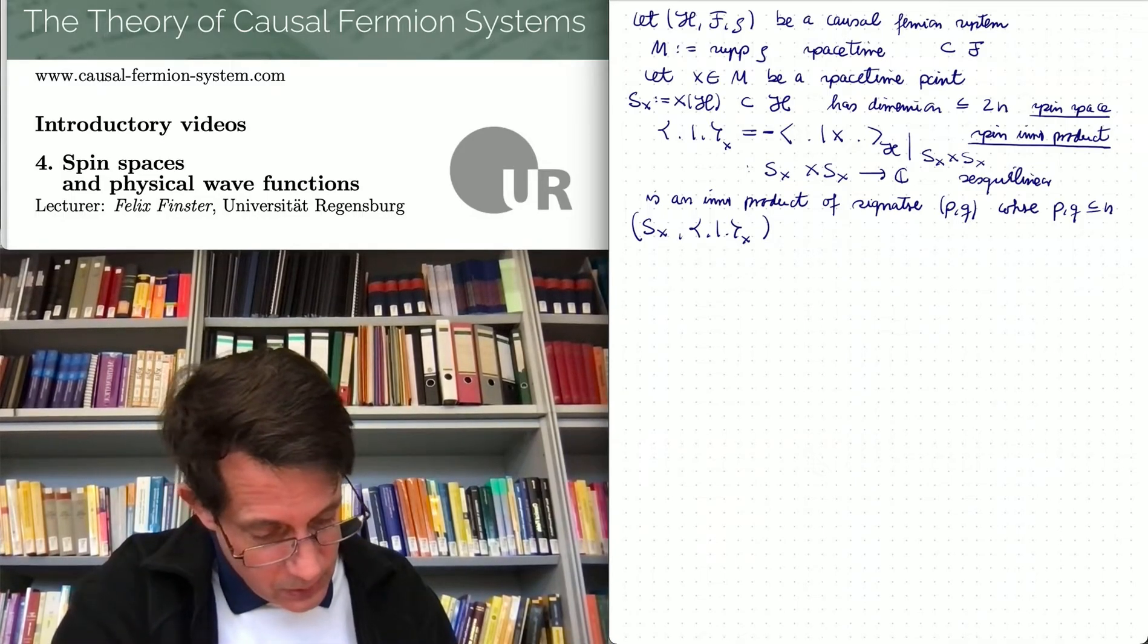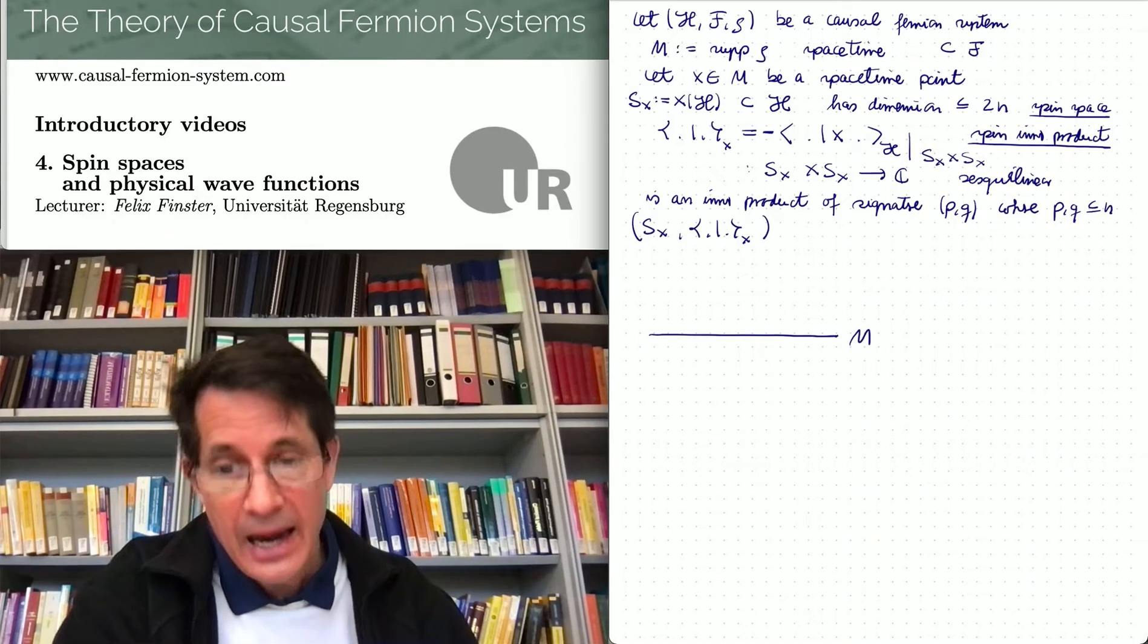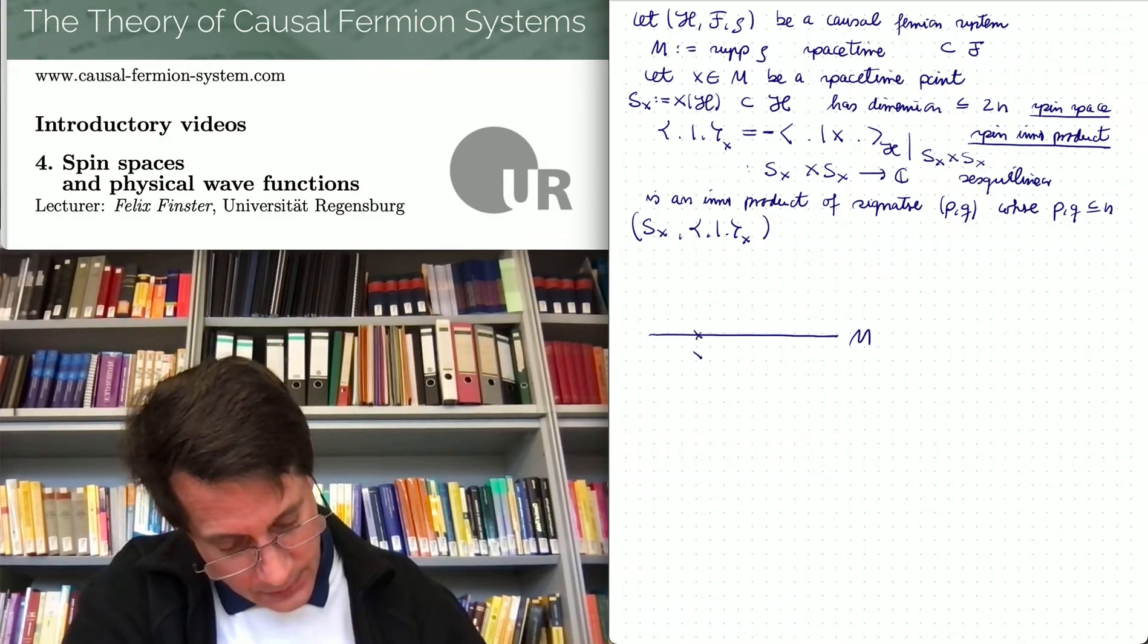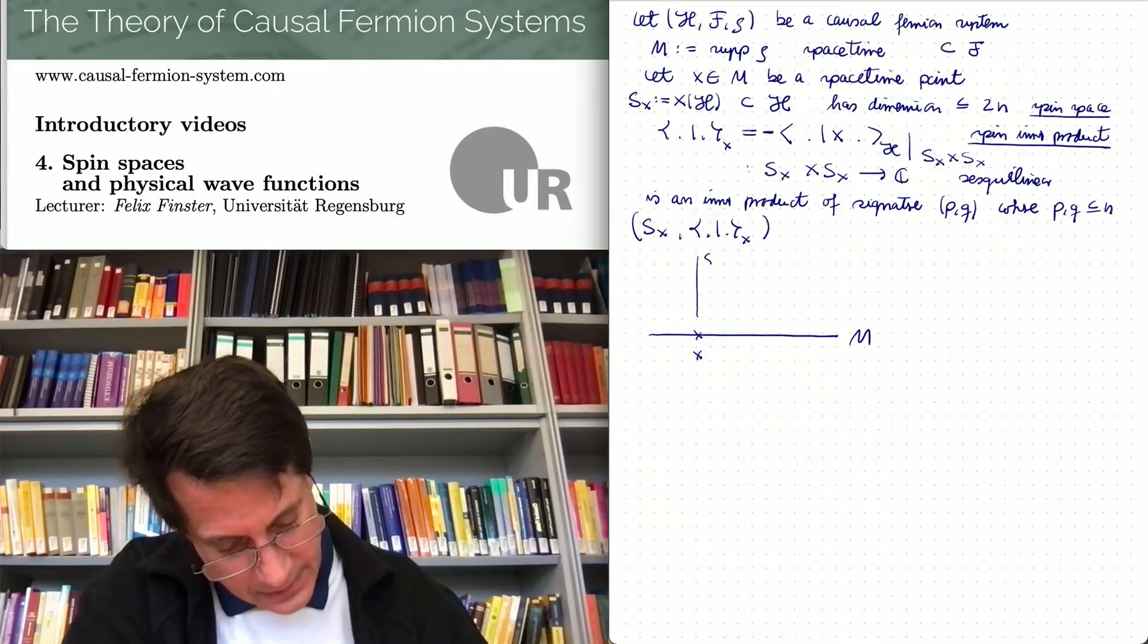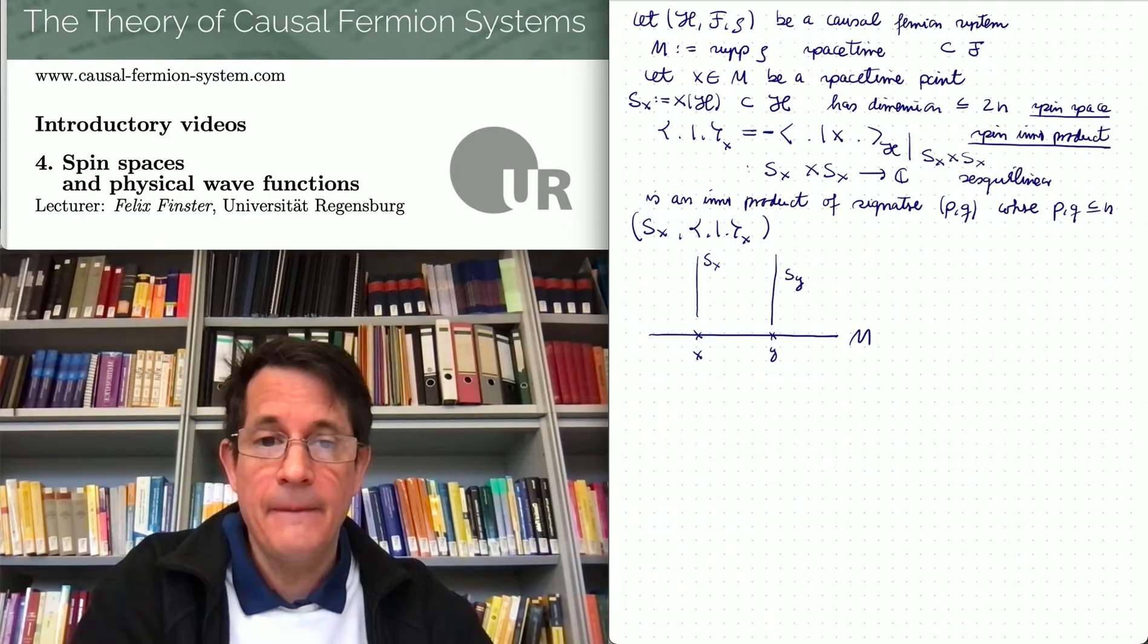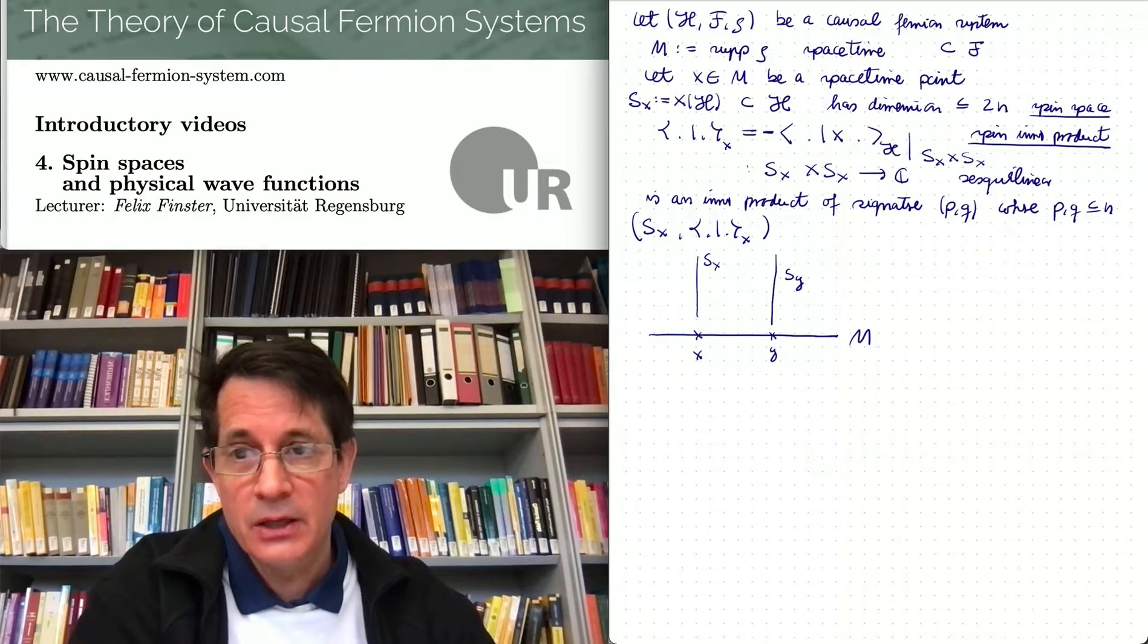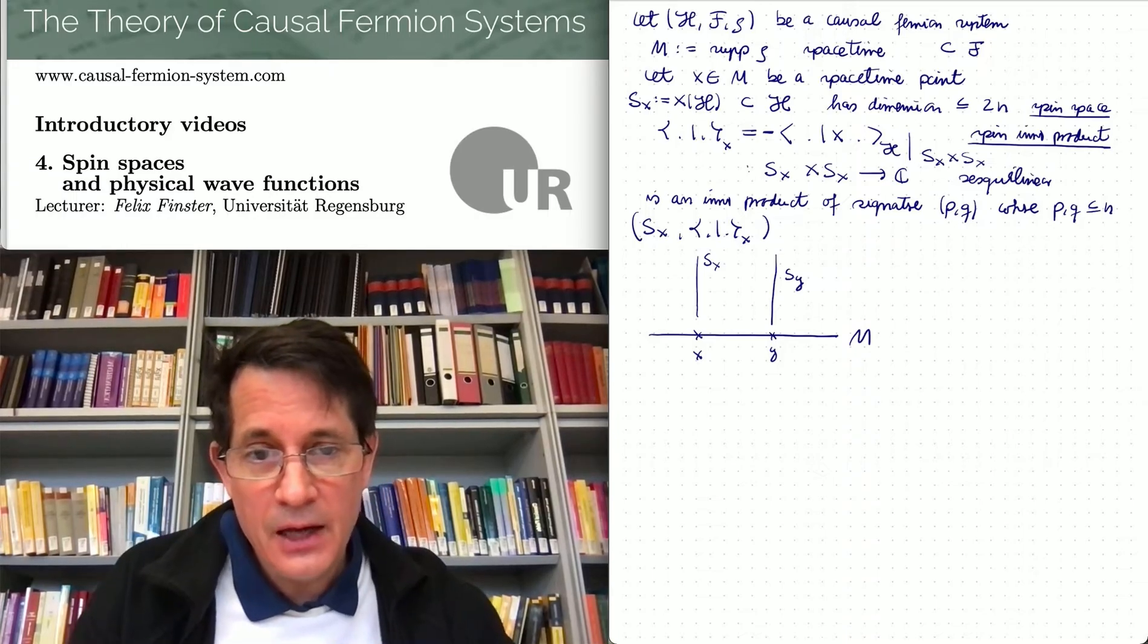We put a subscript x here for clarity. So this is the spin space which comes with an indefinite inner product, the spin inner product. We have this at each spacetime point, so to every spacetime point there is a corresponding spin space attached. Therefore the structure is similar to a vector bundle. Let me draw this: suppose this is M, at every point x I have a corresponding vector space attached.